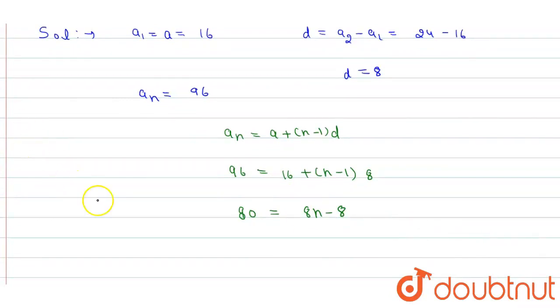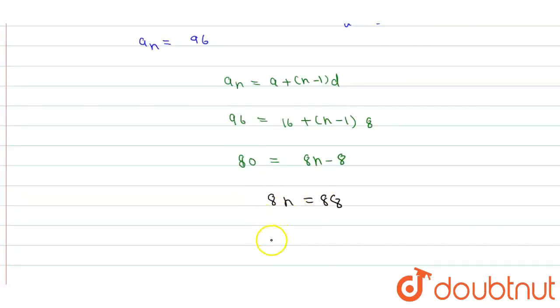So, this gives us 8n equals 88. If I calculate, n is equal to 11. So in this AP, the number of terms I had to calculate, that is the value of n, is 11.